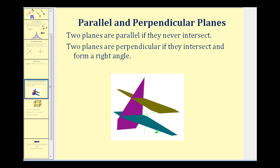Now let's talk about planes. Two planes are parallel if they never intersect. Looking at this figure, plane N is parallel to plane P. If two planes are not parallel, they would intersect. And if they intersect and form a right angle, the two planes are perpendicular. In this case, plane M appears to be perpendicular to both plane N and plane P, because this angle here looks like it's 90 degrees.